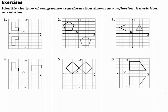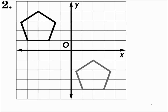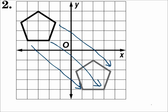Identify the type of congruence transformation shown as a reflection, translation, or rotation. Number one: this figure just flipped over from the top to the bottom. When it flips over, that's called a reflection. Number two: this figure just slides down to the right. Each part of it slides down to the right. The size and shape do not change.